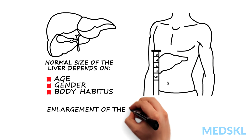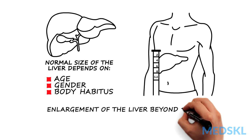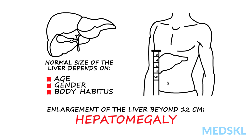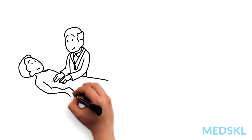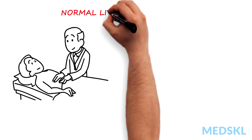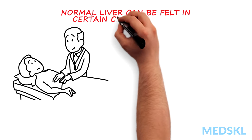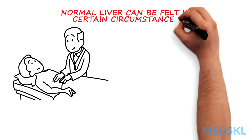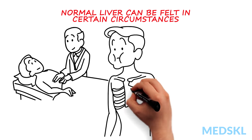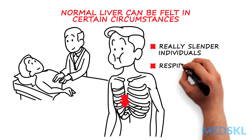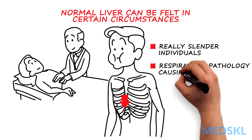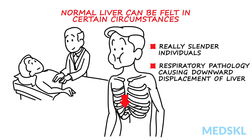Enlargement of the liver beyond the normal expected size is termed hepatomegaly. A palpable liver does not always mean liver pathology. A normal liver can be felt in certain circumstances, such as in really slender individuals or in cases where respiratory pathology has caused downward displacement of the liver.